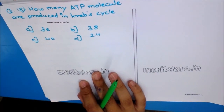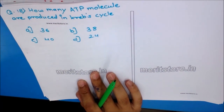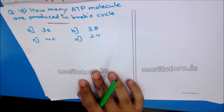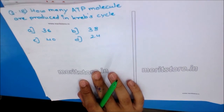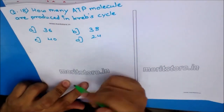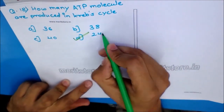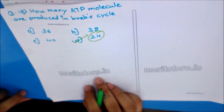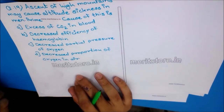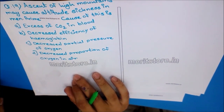Question 18: How many ATP molecules are produced in the Krebs cycle? Options: A) 36, B) 38, C) 40, D) 24. The answer is 24, and it is important to remember this value.